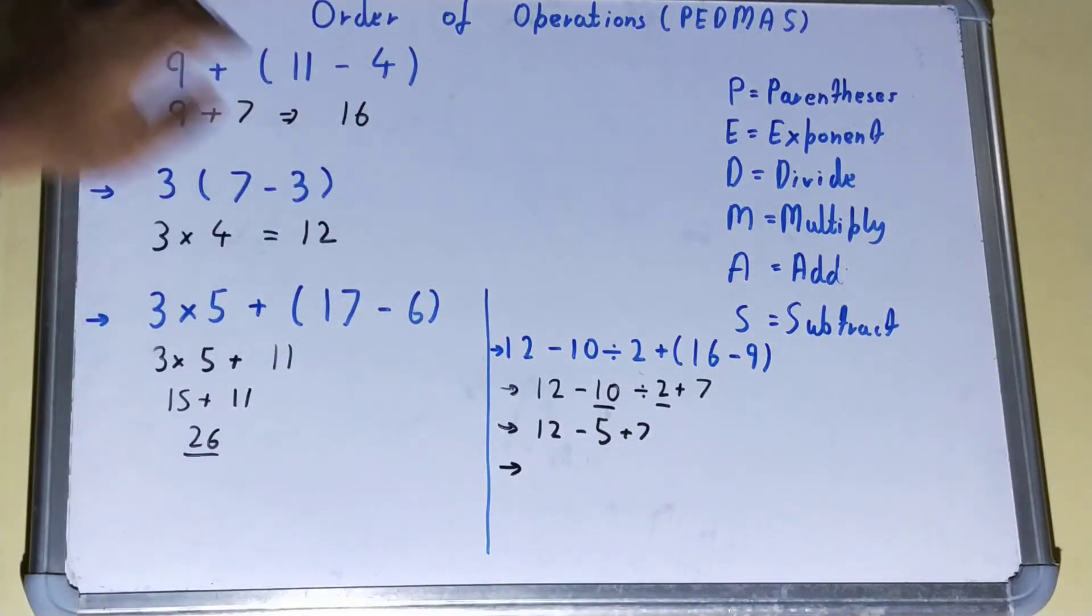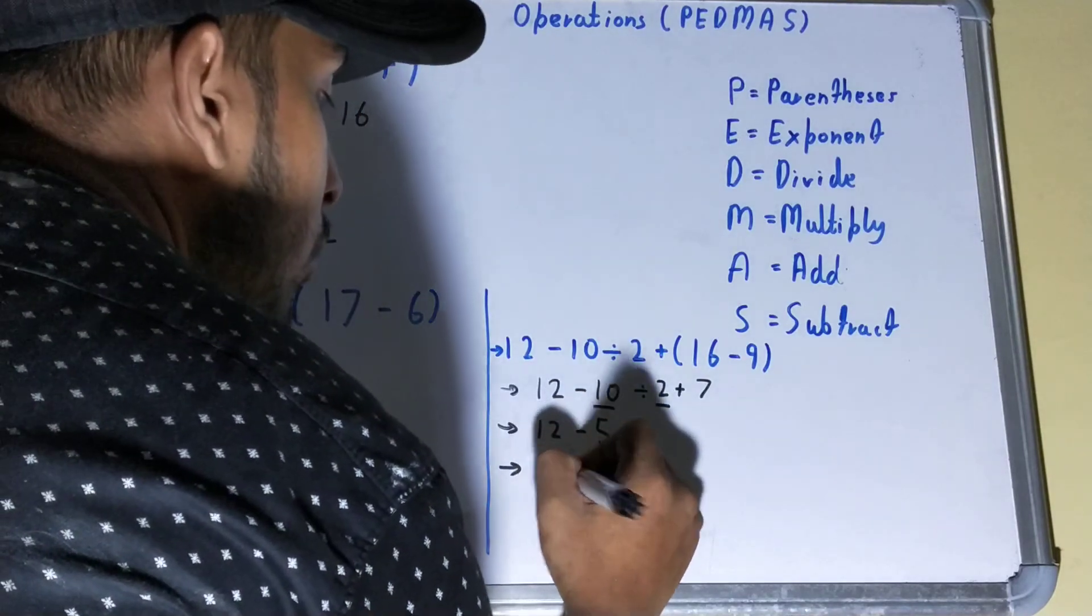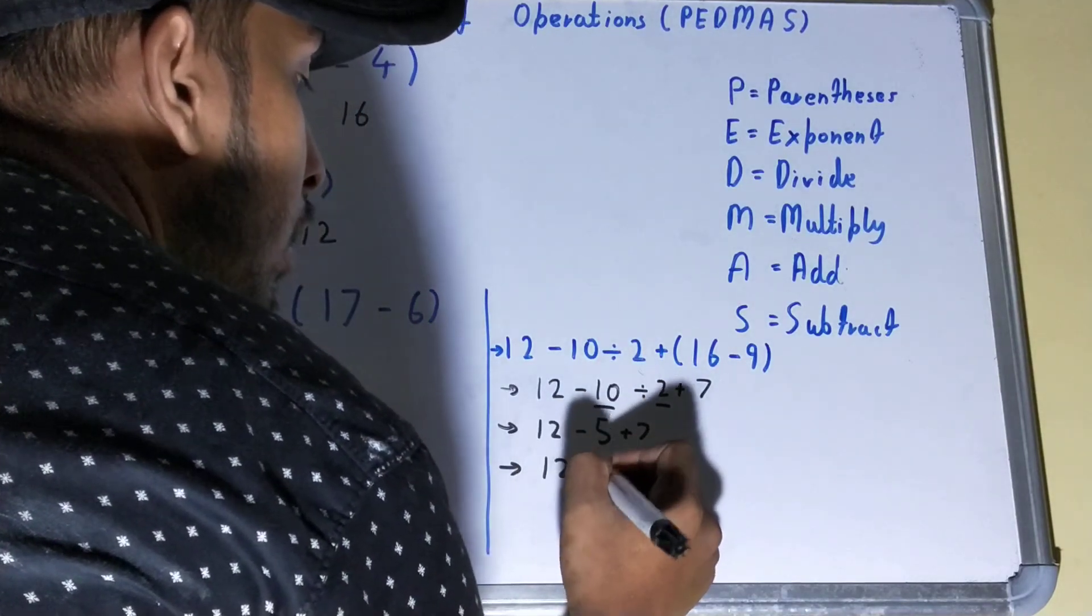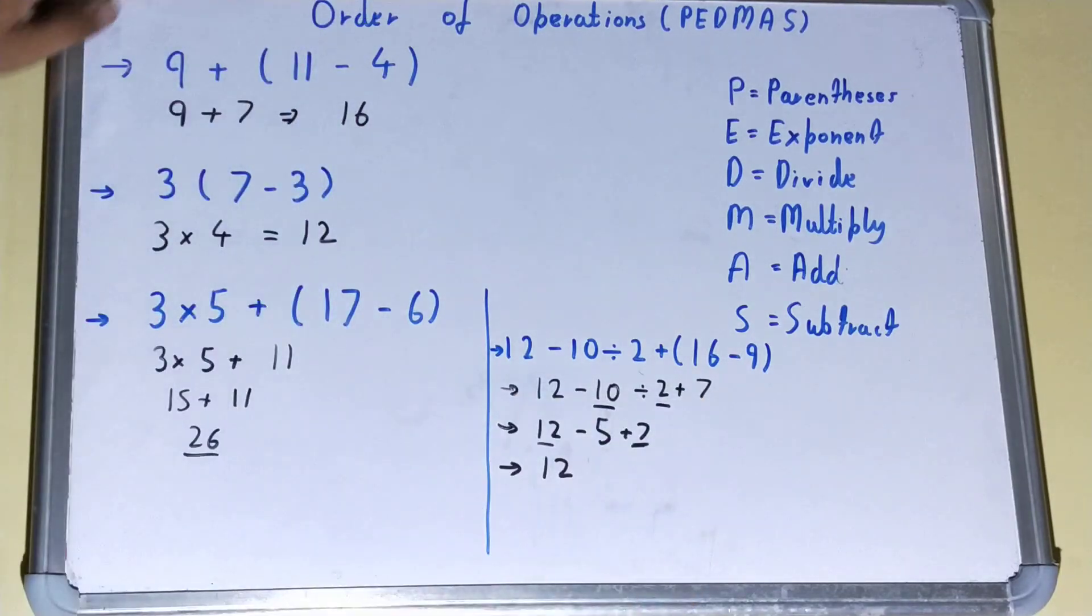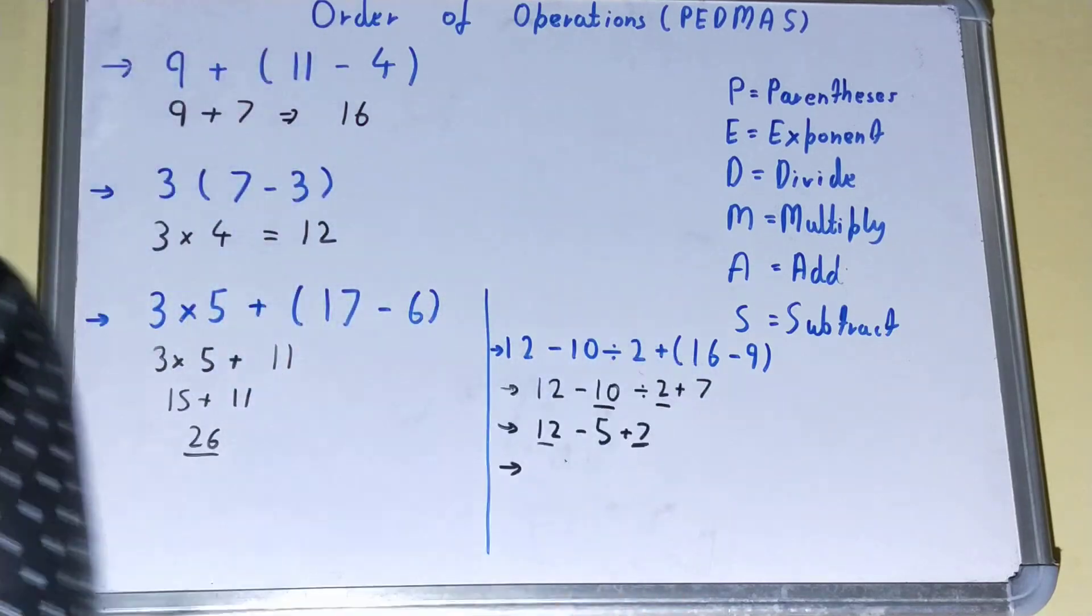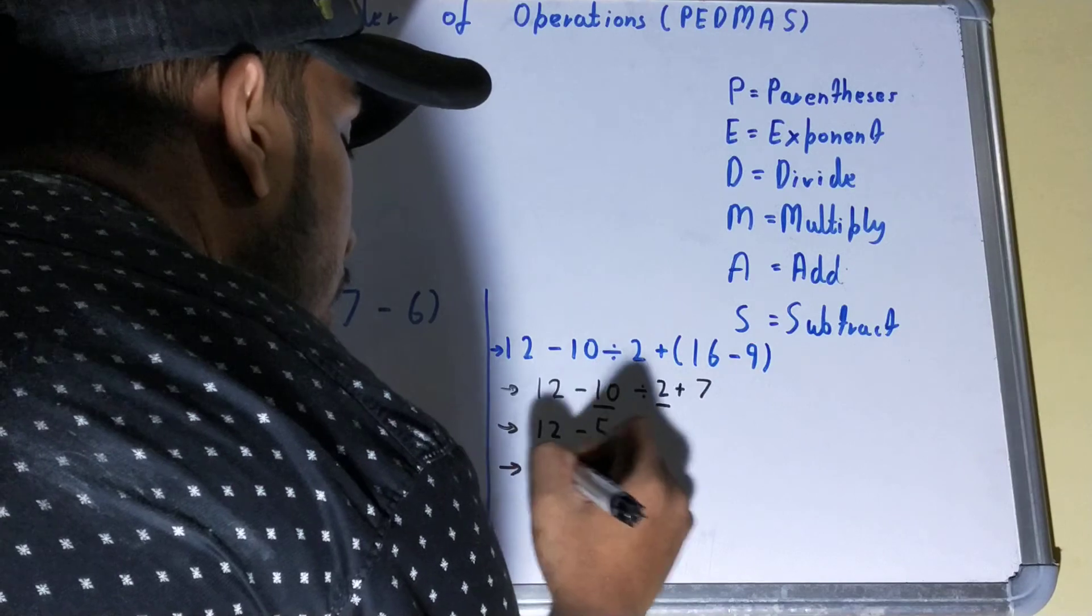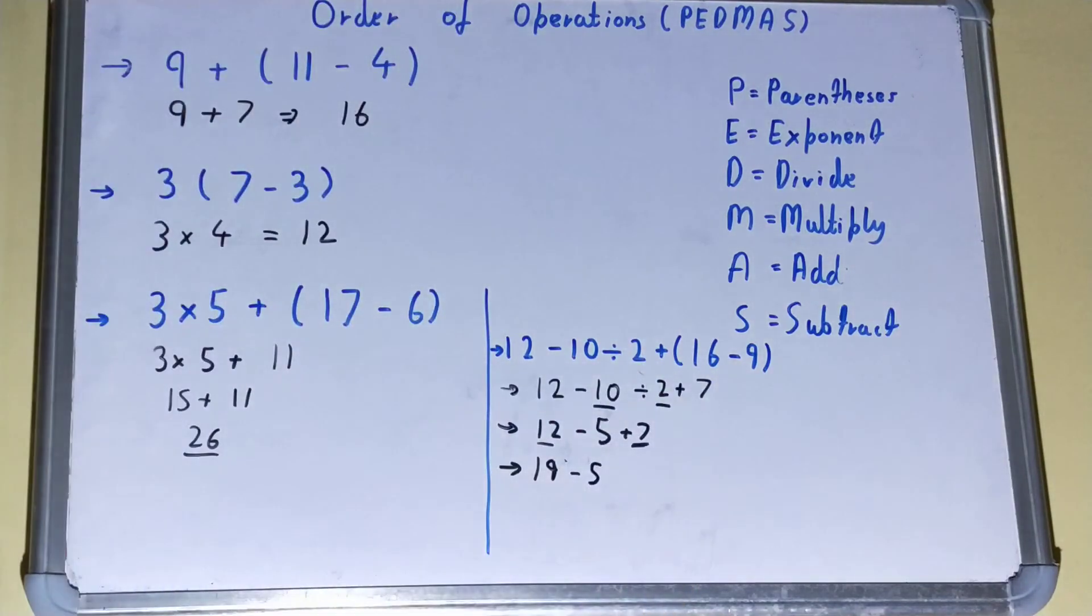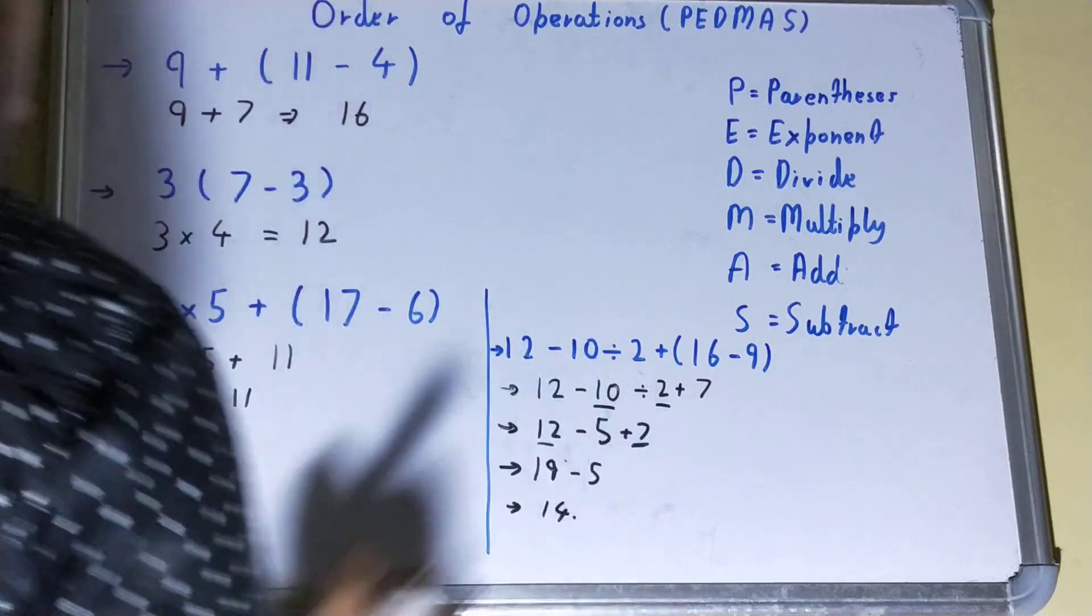Because these two are positive, right? So it will be 12 + 7, how much is it? 19 - 5. Now at last we are left with subtraction, so it will be 14. That's the answer. So this is how you can apply the order of operations or the PEDMAS rule very easily on problems.